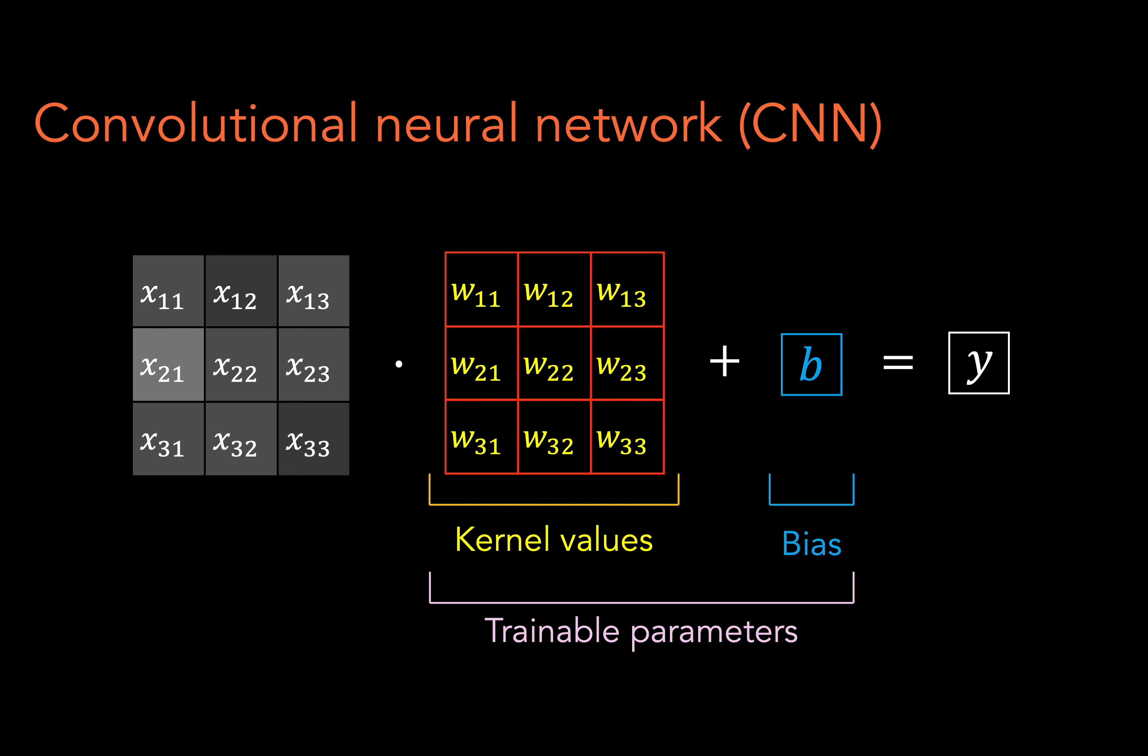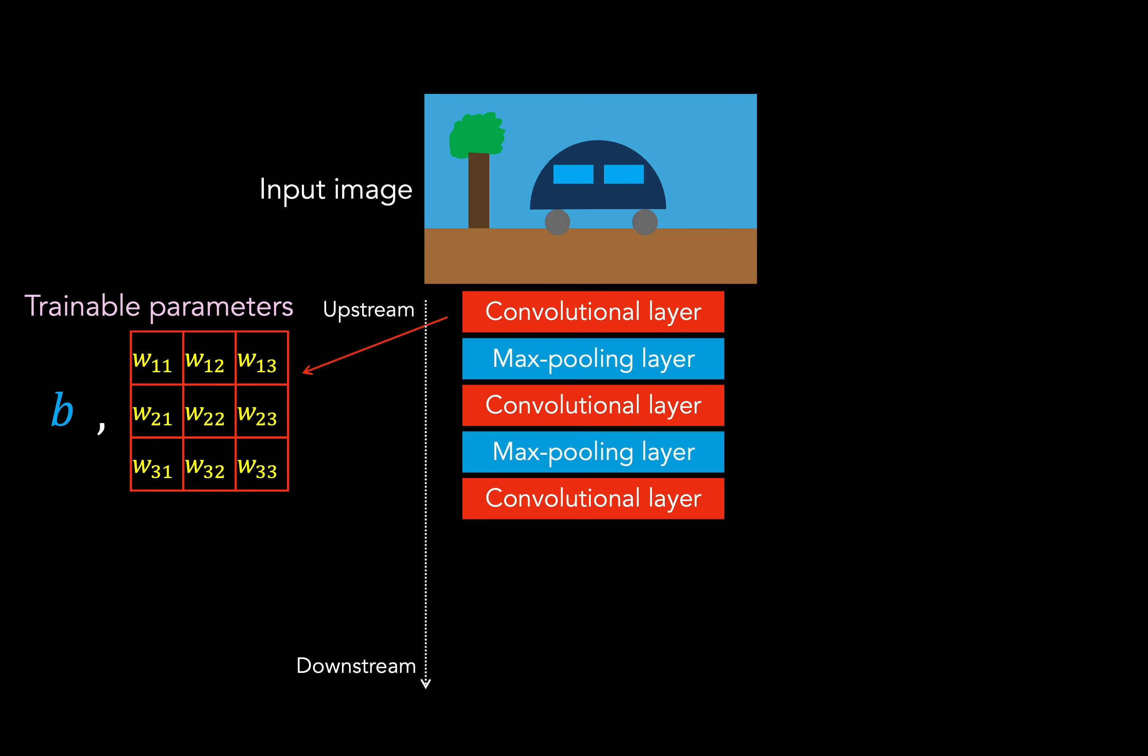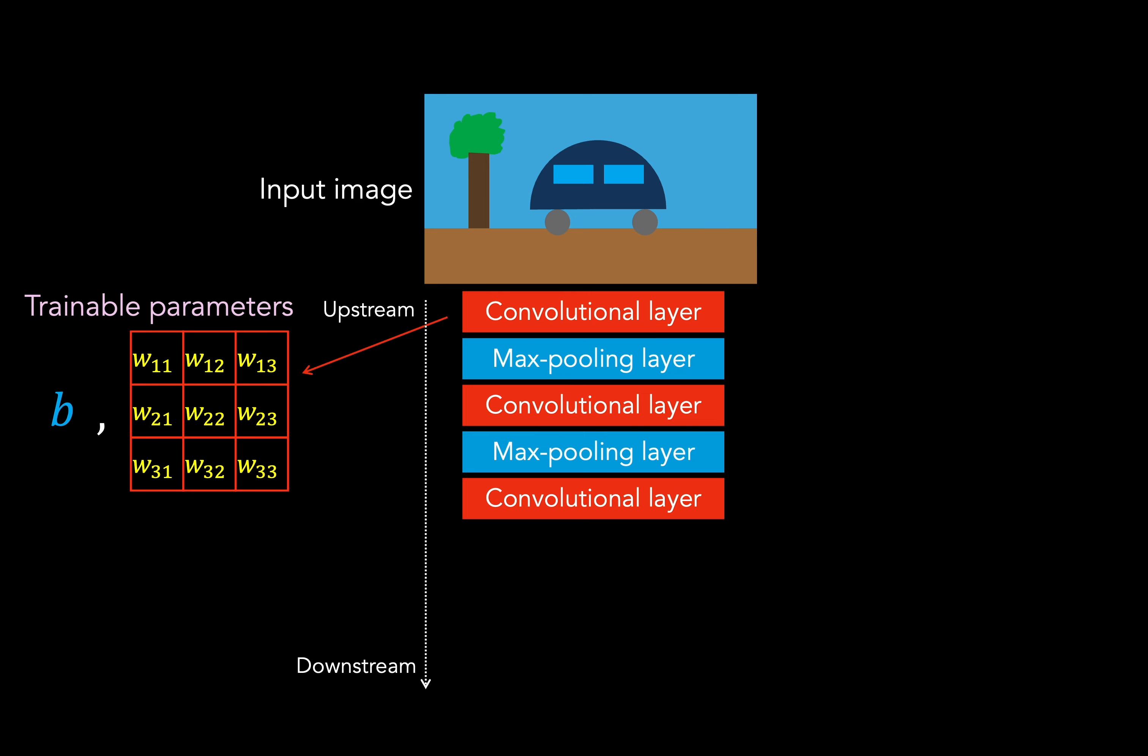So a typical convolutional neural network will include several convolutional layers and these just implement the kernel convolutions. So their trainable parameters would be the kernel values and the biases. Now these may be interspersed by max pooling layers, which just implement the max pooling operation that I described before. So they have no trainable parameters. Now together, the convolutional layers and max pooling layers would distill the input image into some high level feature representation. As we've seen, this typically entails some downsizing, such that as we go down through the network, the dimensions of the feature map get smaller, with the original feature map being the input image itself.